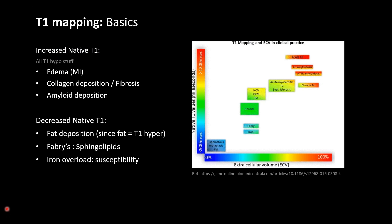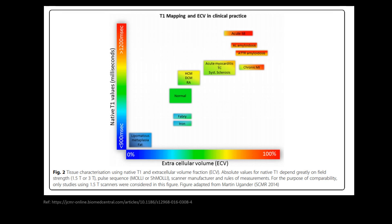Looking at some examples: edema, collagen deposition or fibrosis — which can occur in acute and chronic MI — and deposition diseases like amyloidosis will all have a high T1 value. In very few conditions like fat deposition, Fabry disease in which sphingolipid deposition occurs, or iron overload due to susceptibility effects, there will be a decreased T1 value. On this chart, most pathologies show higher T1 values except for Fabry disease, iron deposition, and lipomatous metaplasia.